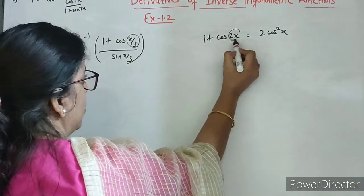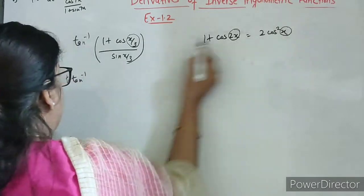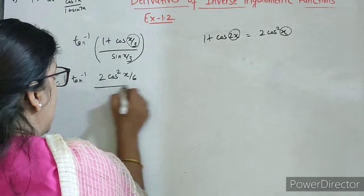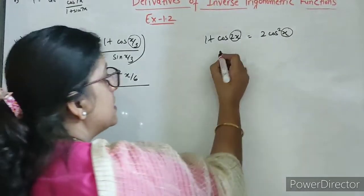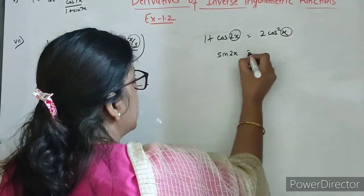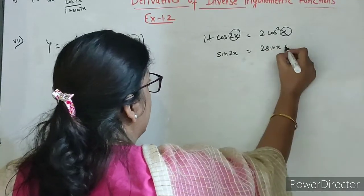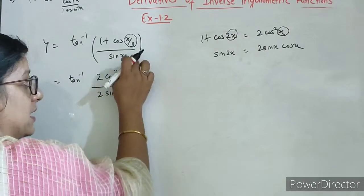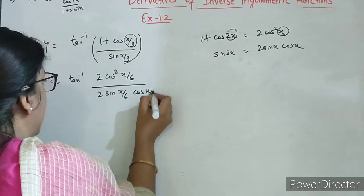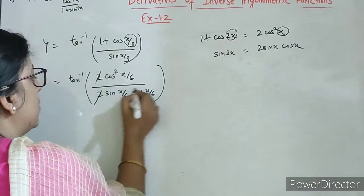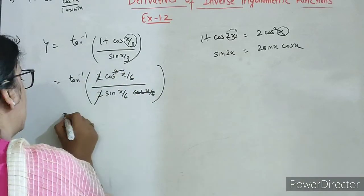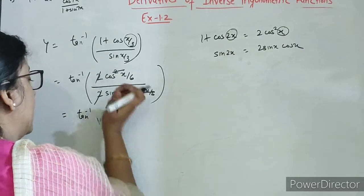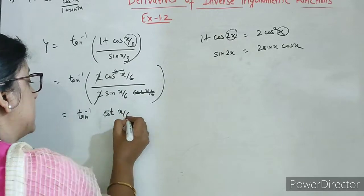Toh mujhe yaha par likhna padega 2 cos square x by 6 — x by 3 ka half x by 6. Similarly, sin 2x ka formulae hota hai 2 sin x cos x. Toh yahaan likhenge 2 sin x by 6 into cos x by 6. Yeh 2 se 2 cancel, 1 cos se 1 cos cancel. Toh yeh aa gaya tan inverse cot x by 6, kyunki cos upon sin that is cot.